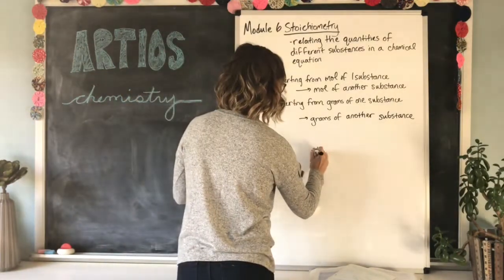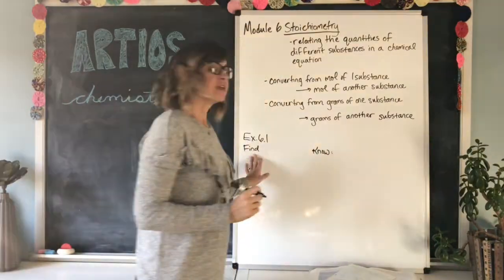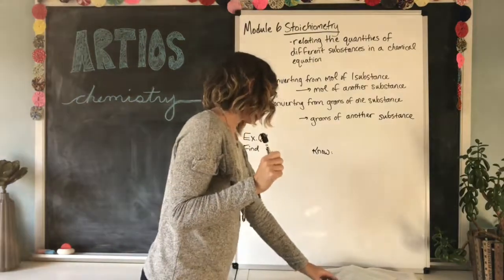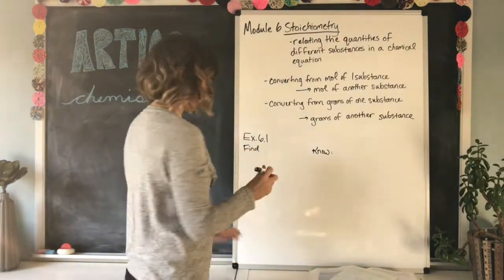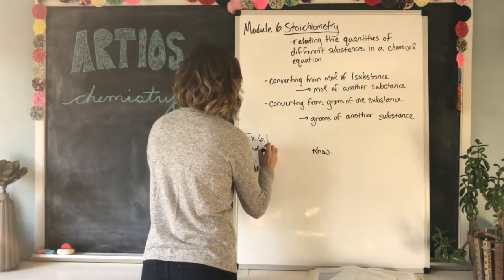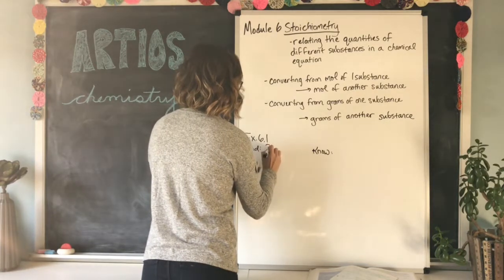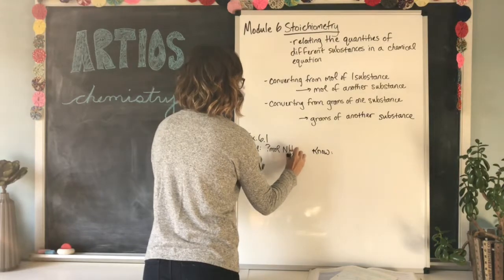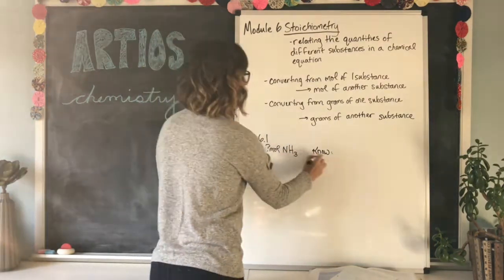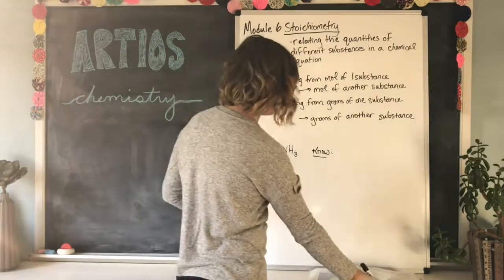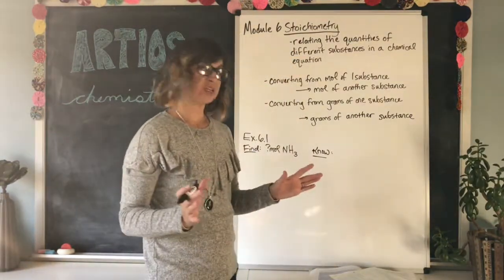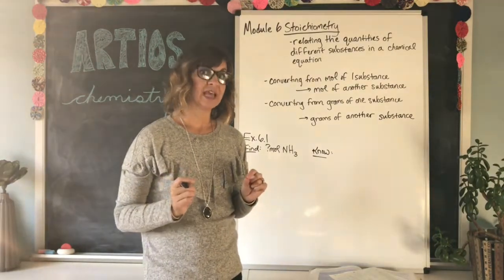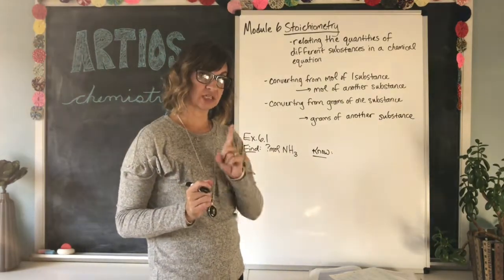Over on this side, I'm going to write know. In this example, we are finding how many moles of ammonia, which is NH3. How many moles of NH3 is needed? That's what we are looking for. And what do we know? The first thing we need to do with any stoichiometry problem is to find the balanced equation. So let's do that first.